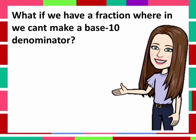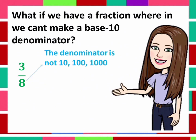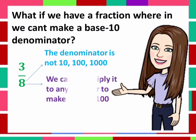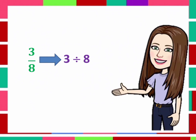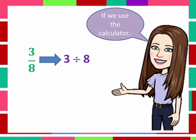Now, what if we have a fraction where we can't make a base 10 denominator? For example, 3 over 8. The denominator is not 10, 100, or 1000, and we can't multiply it by any number to make it 10 or 100. Well, 3 over 8 is also the same as 3 divided by 8. If we use the calculator, 3 divided by 8 is equal to 0.375.